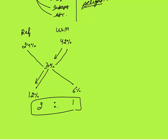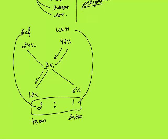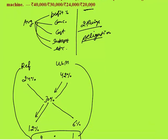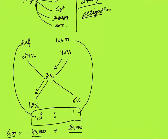This ratio means — since you can't mix a refrigerator and washing machine — this ratio is the ratio of their cost prices, where refrigerator is 2 and washing machine is 1. Total cost was 60,000, so we divide 60,000 in ratio 2 is to 1: refrigerator is 40,000 and washing machine is 20,000. The cost of the washing machine is 20,000 — answer is option D. I have solved this in less than a minute — that's the advantage of allegation.